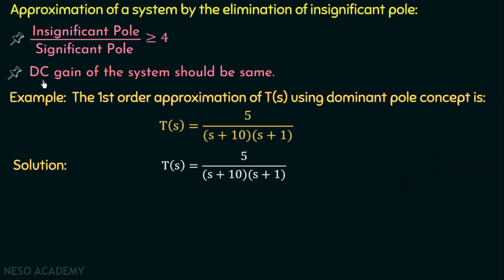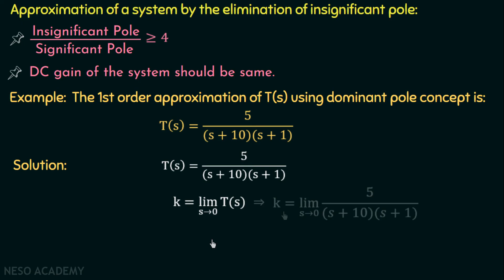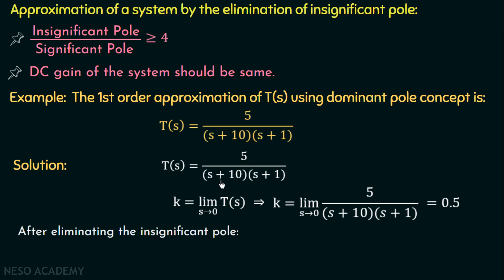For condition 2, we find the DC gain of the system. This is a type 0 system, so the DC gain k = lim(s→0) T(s) = lim(s→0) 5/[(s+10)(s+1)] = 5/(10×1) = 0.5. So the DC gain is 0.5, and after approximation it must remain 0.5. After eliminating the insignificant pole at s = -10, the approximate transfer function becomes T(s) = 0.5/(s+1). The DC gain of this first order system equals 0.5, matching the original. This is the first order approximation using the dominant pole concept.